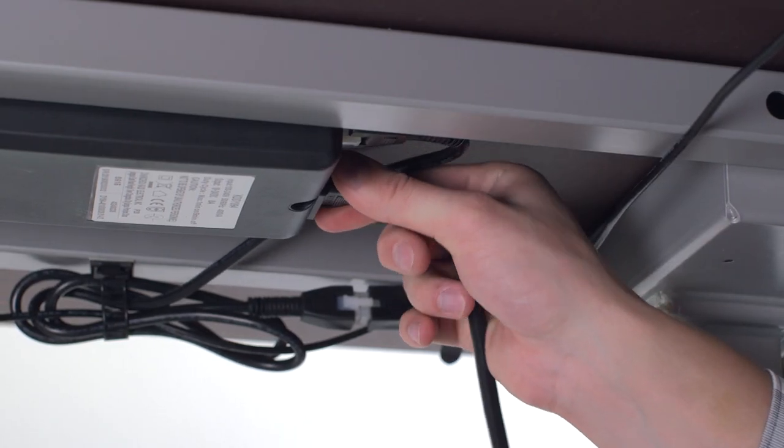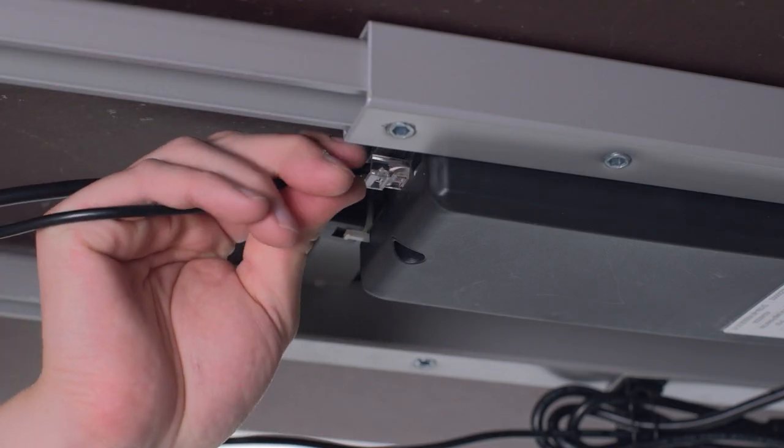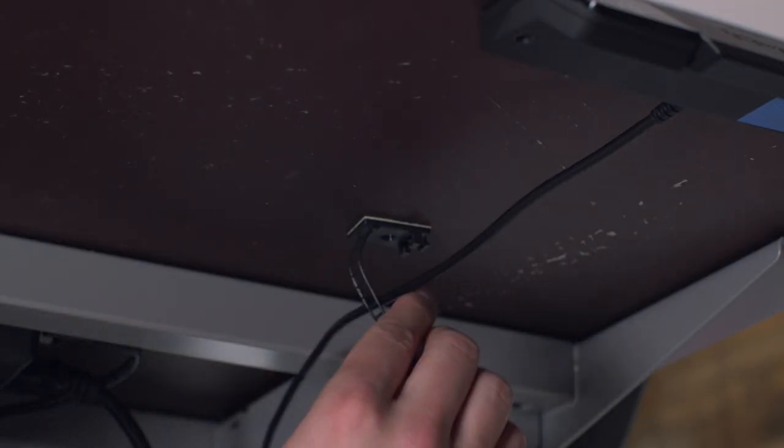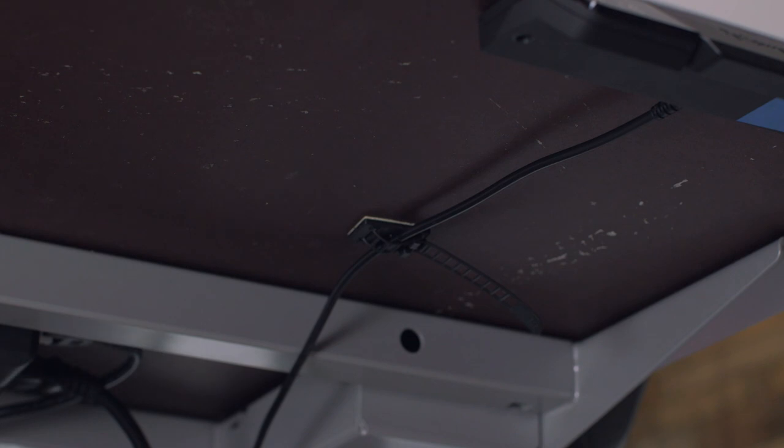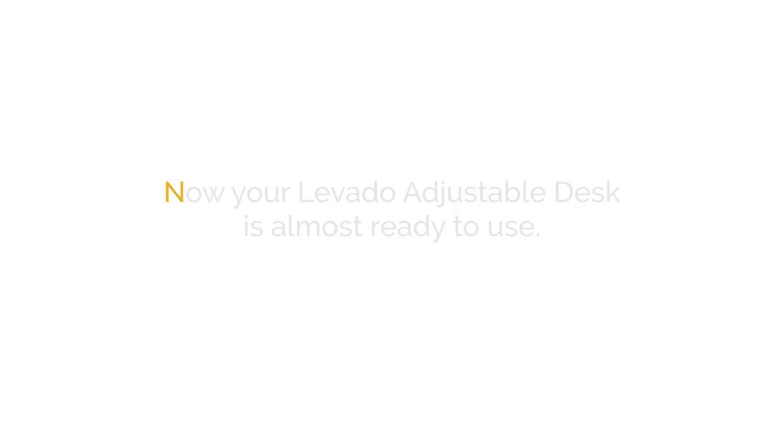Plug in power cable and control panel to the base of the desk. Use the additional cable management as needed and be careful that the cables don't interfere with the table operation. Now your Lovato adjustable desk is almost ready to use.